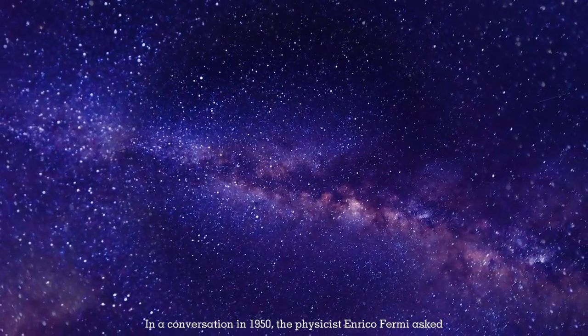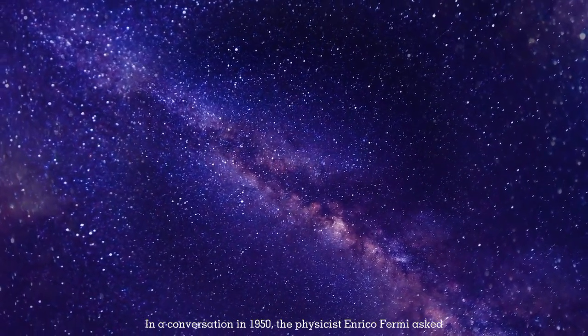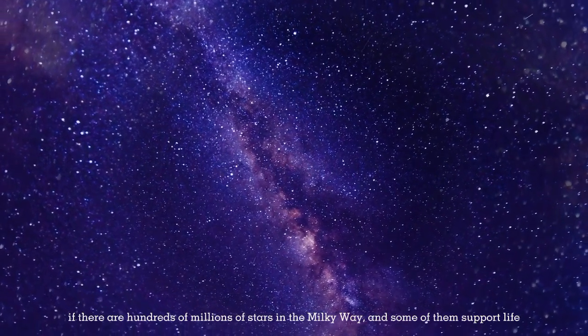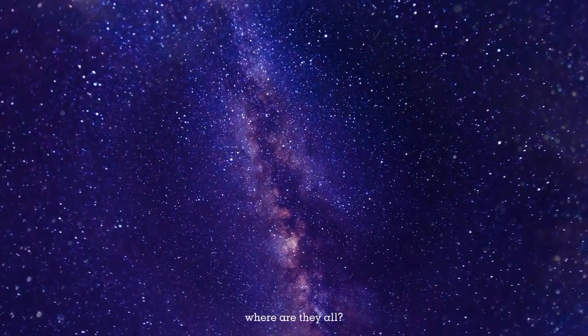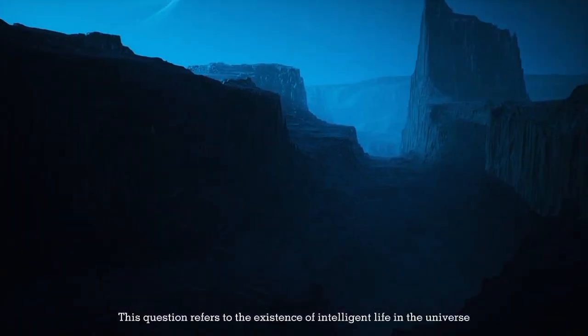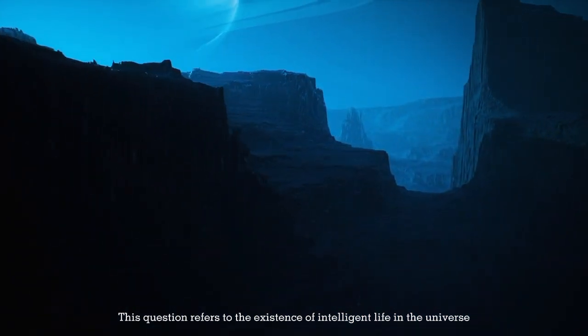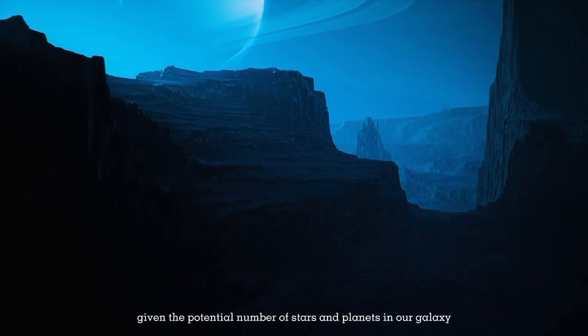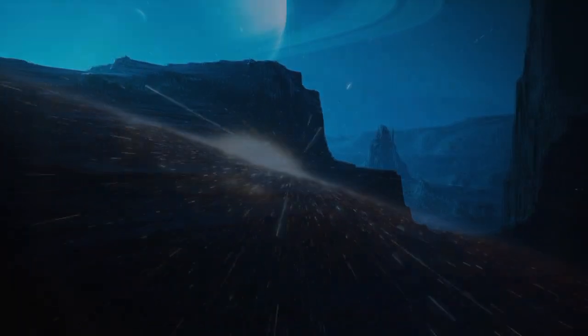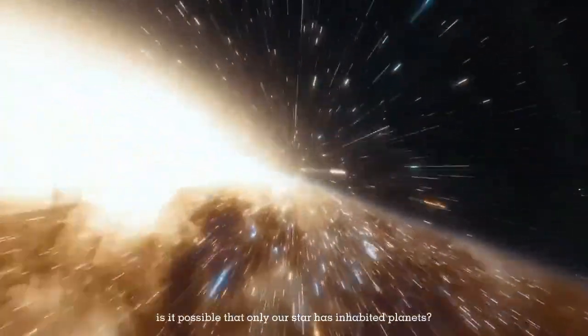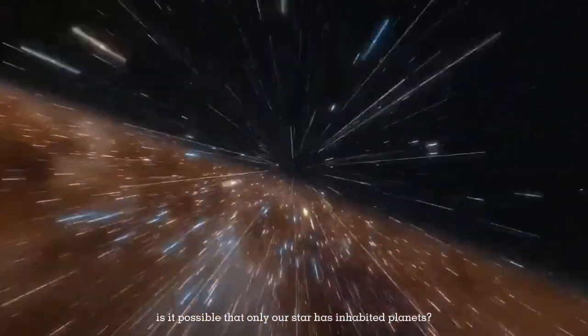In a conversation in 1950, the physicist Enrico Fermi asked if there are hundreds of millions of stars in the Milky Way, and some of them support life, where are they all? This question refers to the existence of intelligent life in the universe, given the potential number of stars and planets in our galaxy. With hundreds of millions of stars in the Milky Way galaxy, is it possible that only our star has inhabited planets?